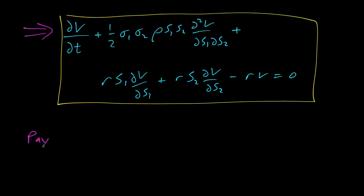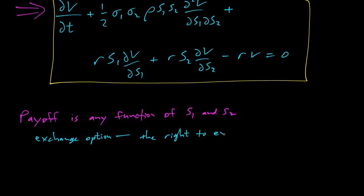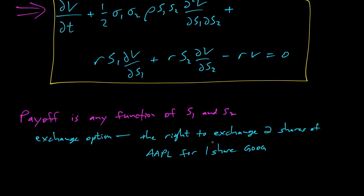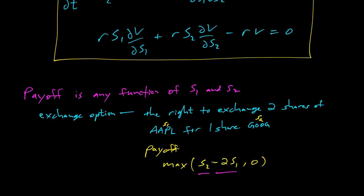That's cool — it means we can price options whose payoff is any function of S1 and S2. An example is an exchange option: I have the right to exchange two shares of Apple for one share of Google. At expiration, if Google has gone up and Apple has gone down, this could be valuable. The payoff is max(S2 − 2S1, 0) — I'm paying two shares of Apple and getting one share of Google, with the max because I have the option and don't have to exercise.